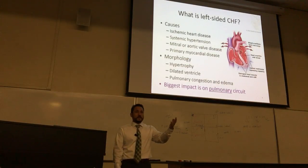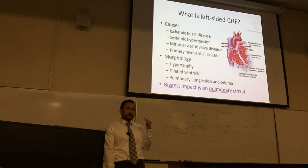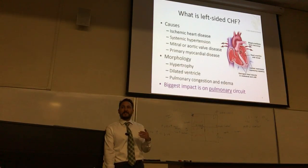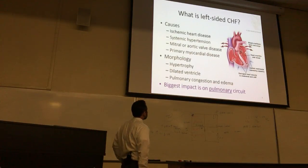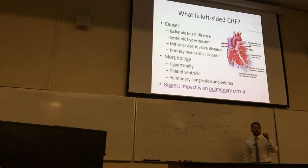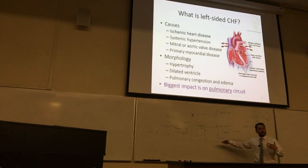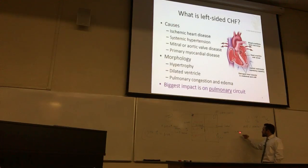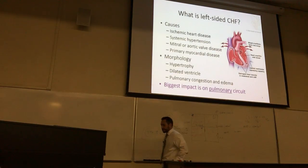Mitral or aortic valve disease is another cause. The two valves at greatest risk of wearing out are on the left side because it's the high-pressure side. The mitral valve — the bicuspid valve — is between the left atrium and left ventricle; mitral valve failure causes regurgitation. The aortic valve opens and closes as blood flows out. You very rarely have to replace the tricuspid valve because the pressures on the right side are very low.